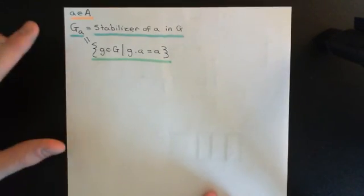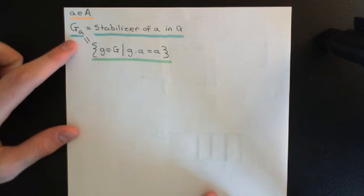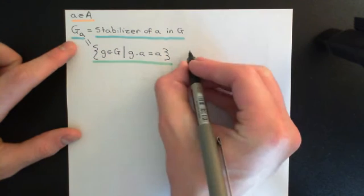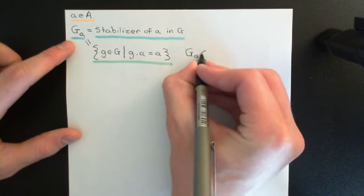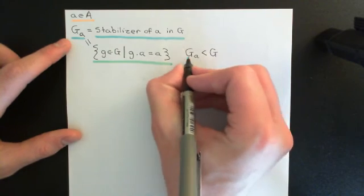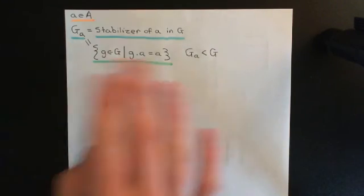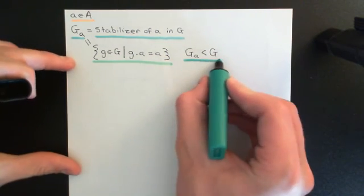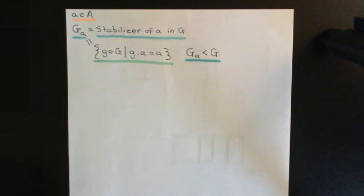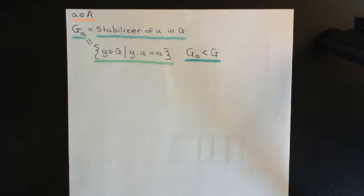What I now want to prove is that the stabilizer of a in G is actually a subgroup of the group capital G — it's more than a subset. So I want to prove that the stabilizer of a in G is always a subgroup of capital G, no matter what little a you use. It is a subset of capital G, and to show that a subset of capital G is a subgroup, we need to prove that with the inherited composition law it obeys the axioms of group theory — that it's a group in its own right.